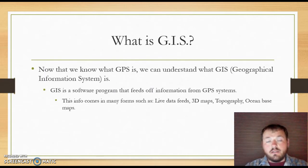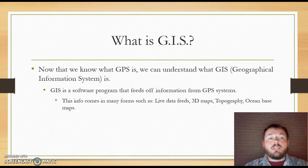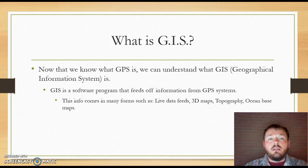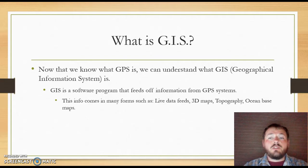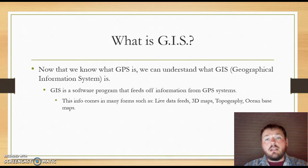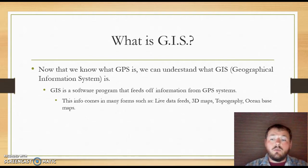GIS is the Geographical Information System. It's a little difficult to grasp, but GIS is a software program — it's not necessarily a physical satellite like GPS is. This information comes in many forms, such as live data feeds, 3D maps, topography, and ocean-based maps. It pulls information from GPS, feeding off of those systems. It gathers that data, and everything is very high quality with GIS. It's a very interesting tool.